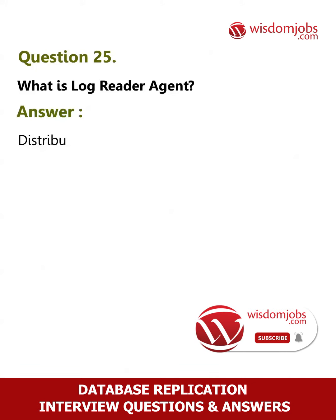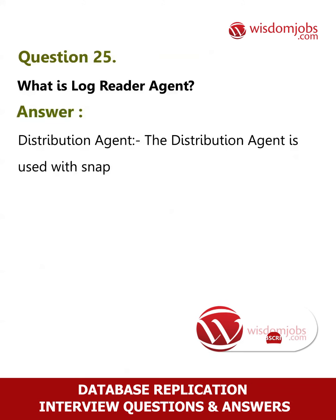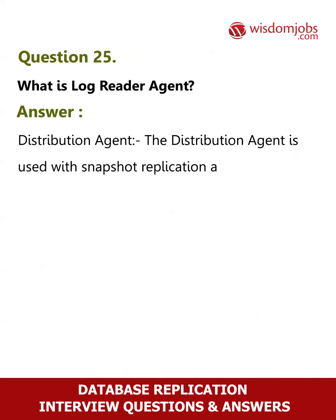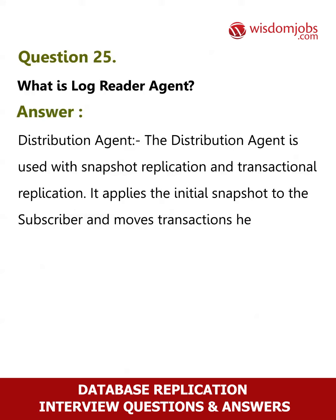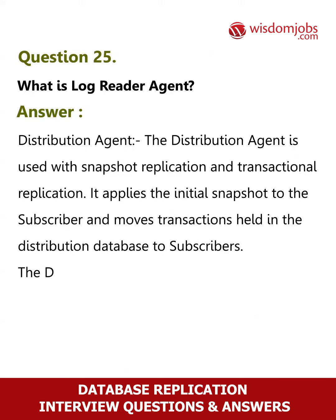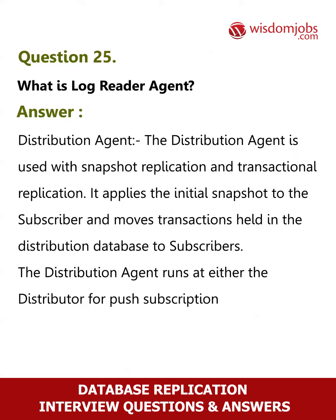Question 25. What is the distribution agent? Answer. The distribution agent is used with snapshot replication and transactional replication. It applies the initial snapshot to the subscriber and moves transactions held in the distribution database to subscribers. The distribution agent runs at either the distributor for push subscriptions, or at the subscriber for pull subscriptions.